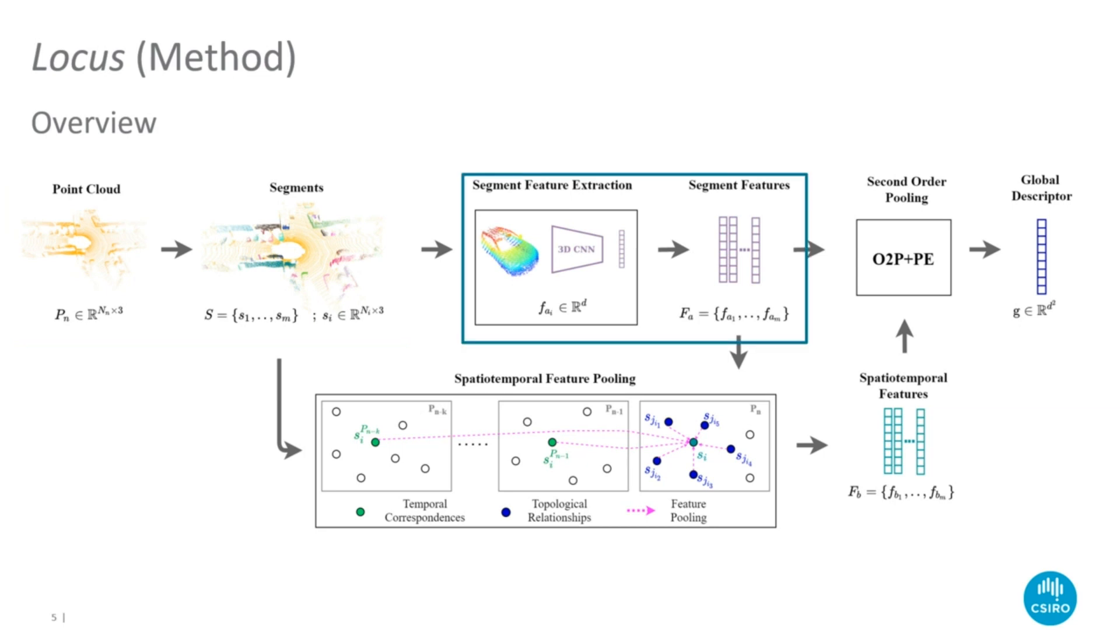The first feature, noted as FA, encodes the structural appearance of the segment. The second feature, noted as FB, encodes the topological relationships and temporal consistency of segments. These complementary features are then aggregated using second-order pooling to obtain a fixed-size scene descriptor which is invariant to the order and number of segments.